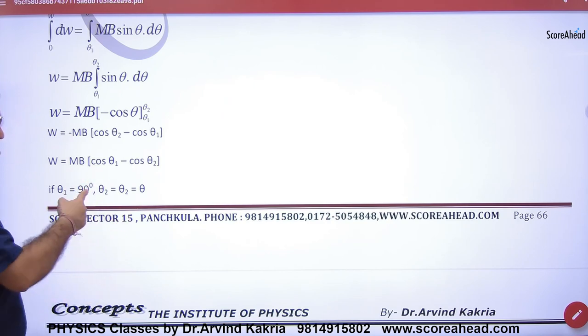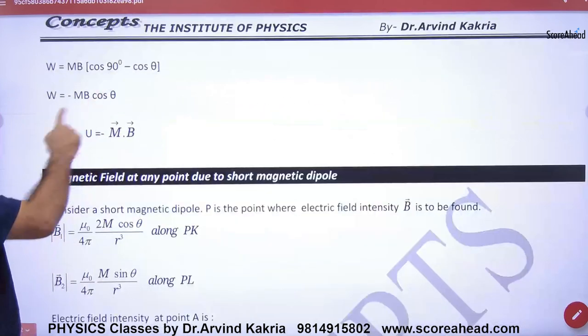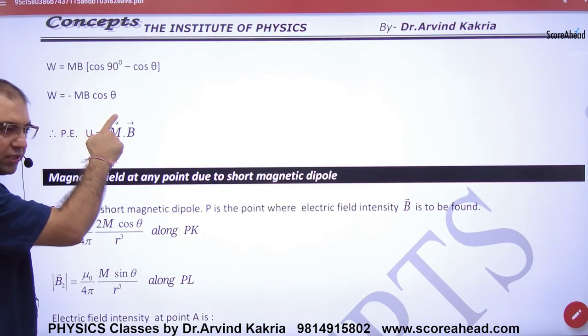And it was also a special case. If one angle is 90, one angle is theta. What is the potential energy formula? Minus MB cosθ. And in the form of vector form,